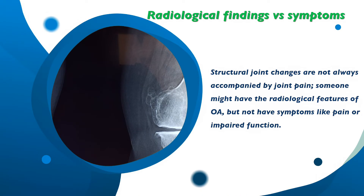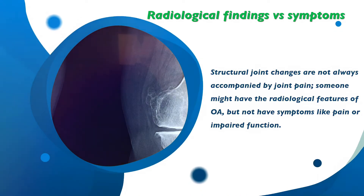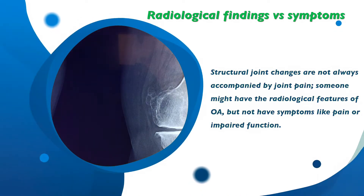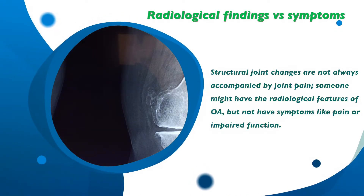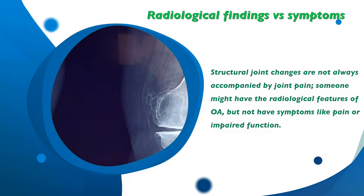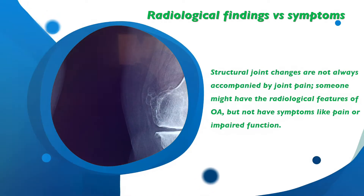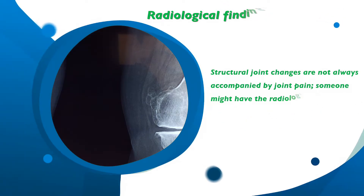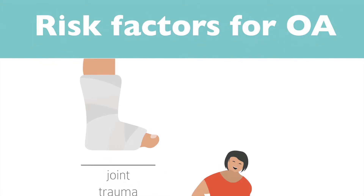One of the complicated aspects of OA is that structural joint changes are not always accompanied by symptoms like joint pain. So someone might have the radiological features of OA but not have symptoms like pain or impaired function. The pathological features of osteoarthritis are usually present regardless of the inciting factors, and are linked with lots of different risk factors.